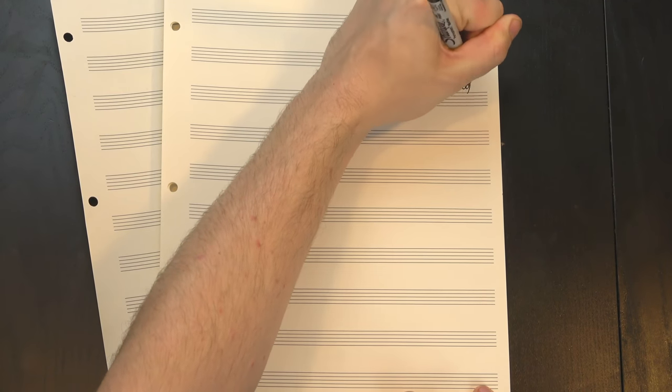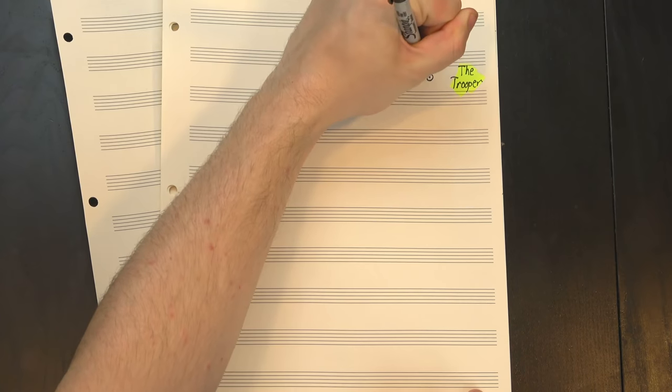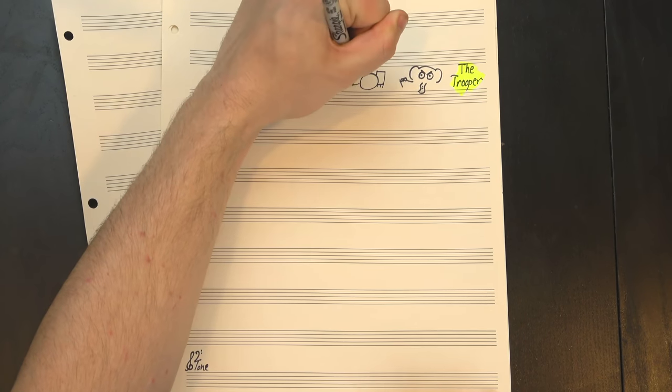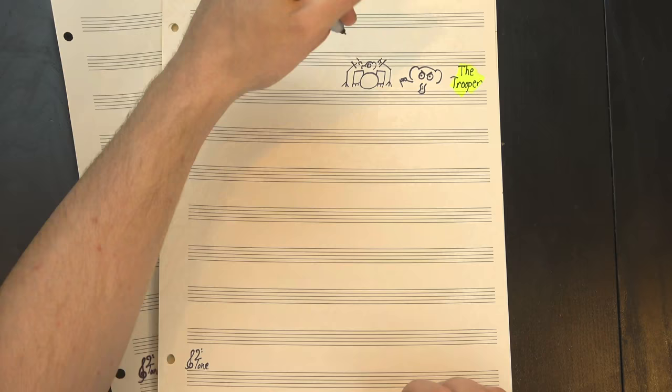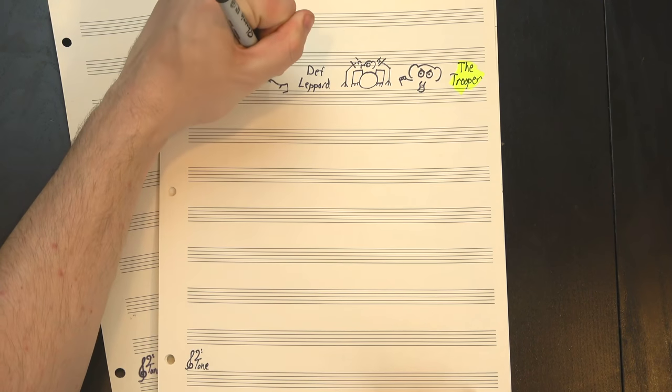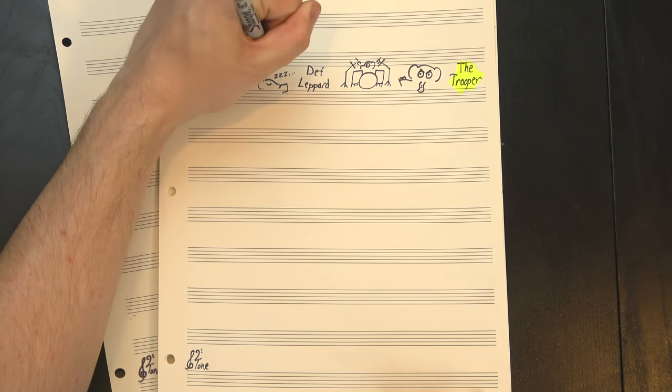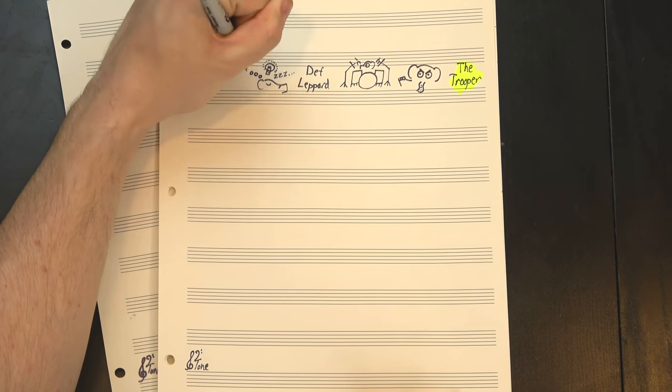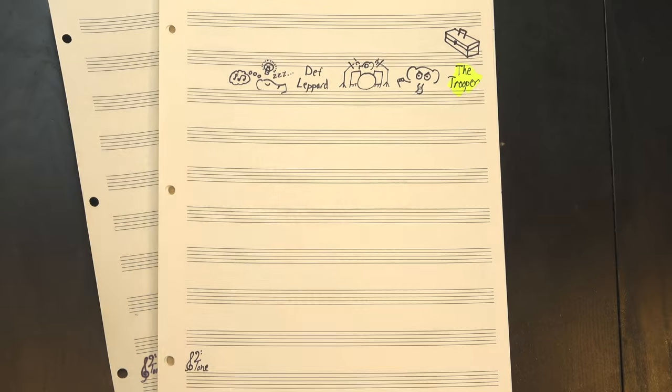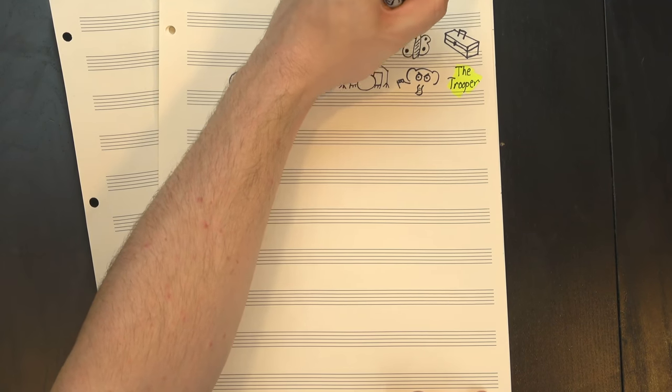A while back, I made a video about The Trooper by Iron Maiden, and I got a lot of comments objecting to the fact that when listing important bands from the new wave of British heavy metal, I included Def Leppard. I largely ignored these comments because I was right, but it got me thinking about what genres are, how we use them, and why I kinda wish we'd use them differently.